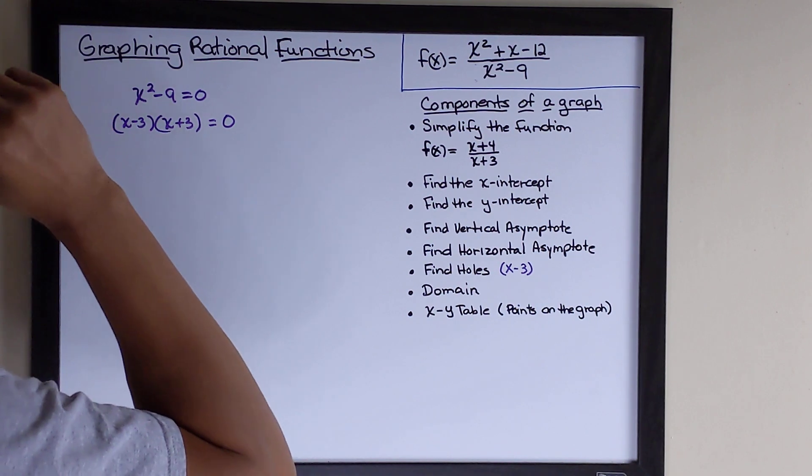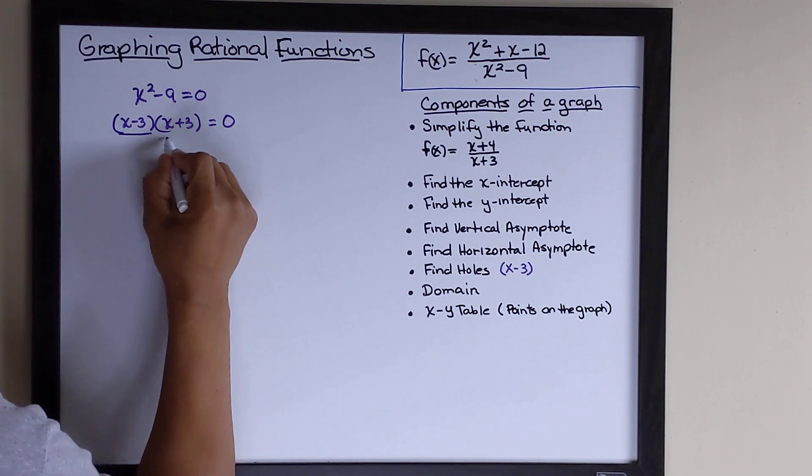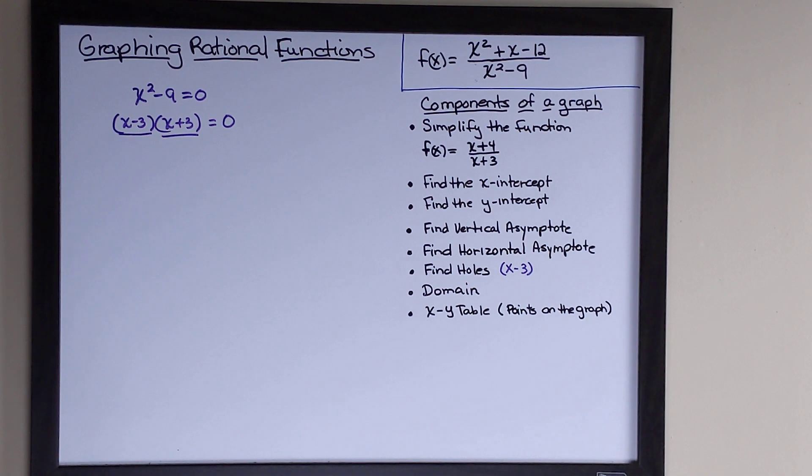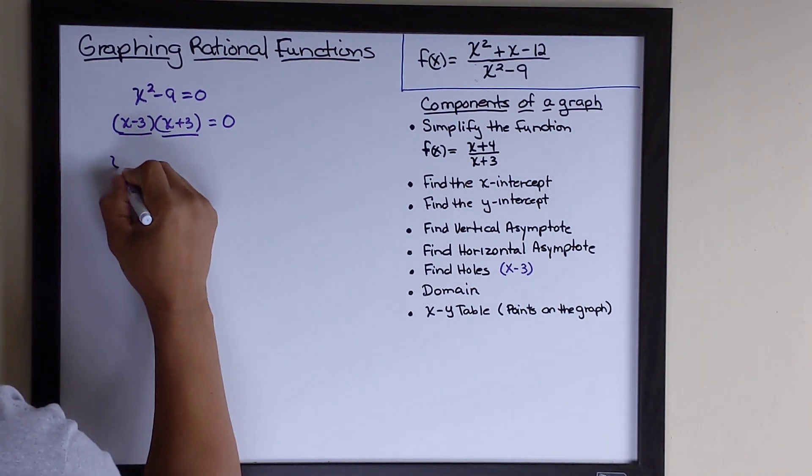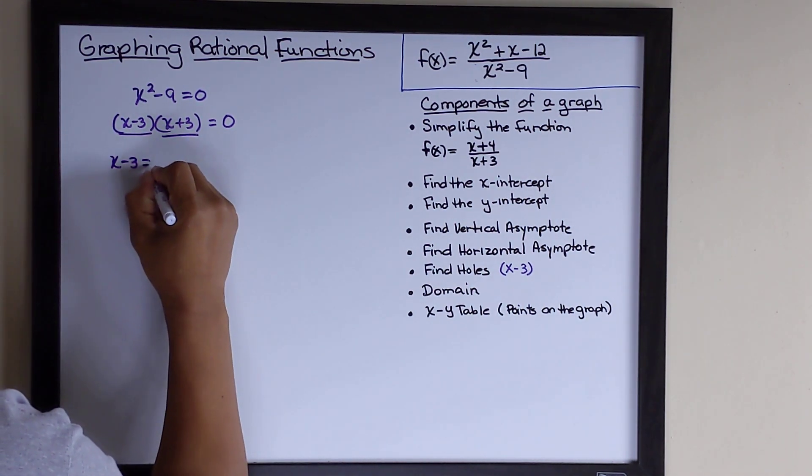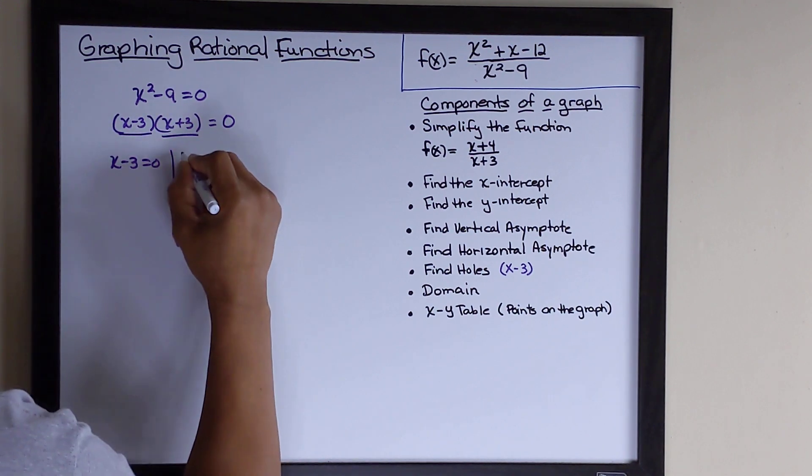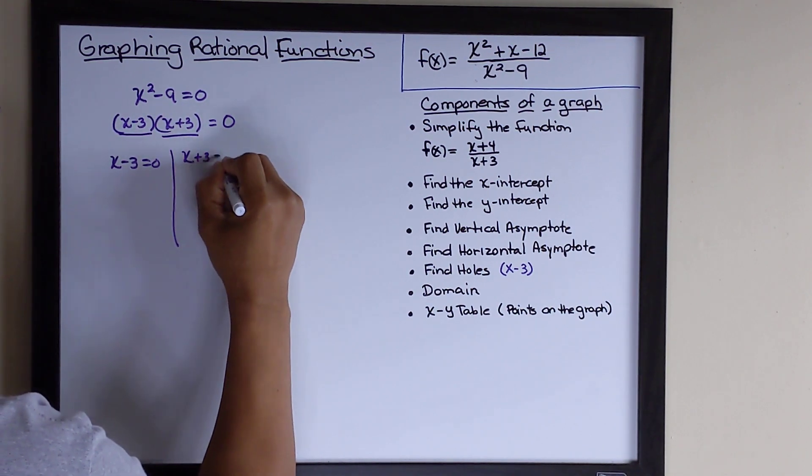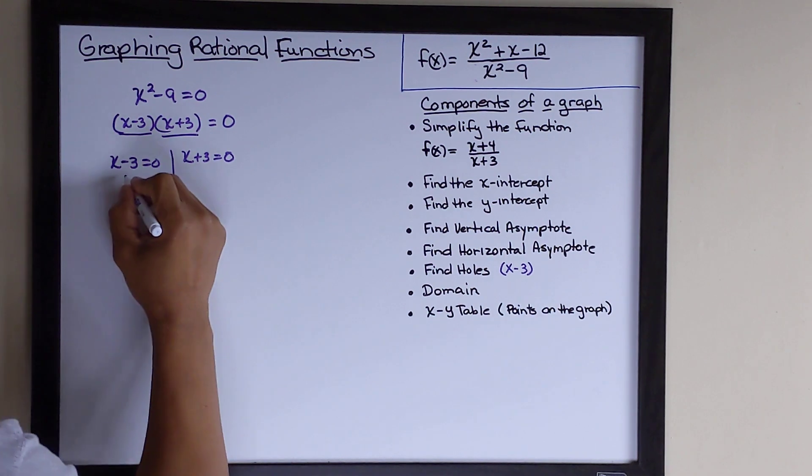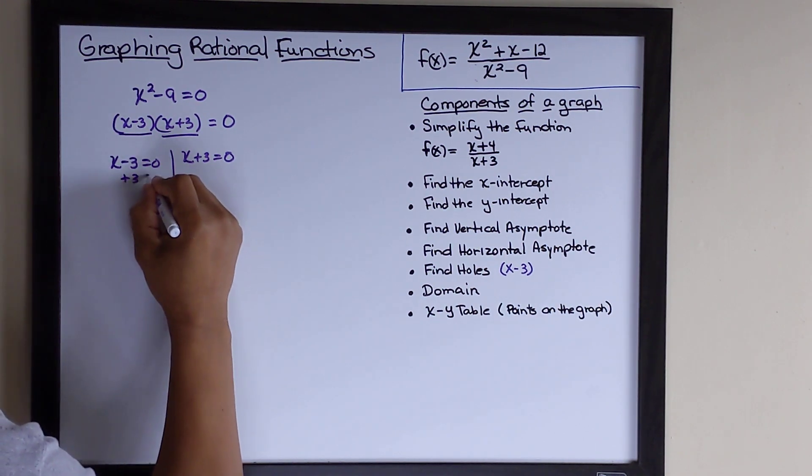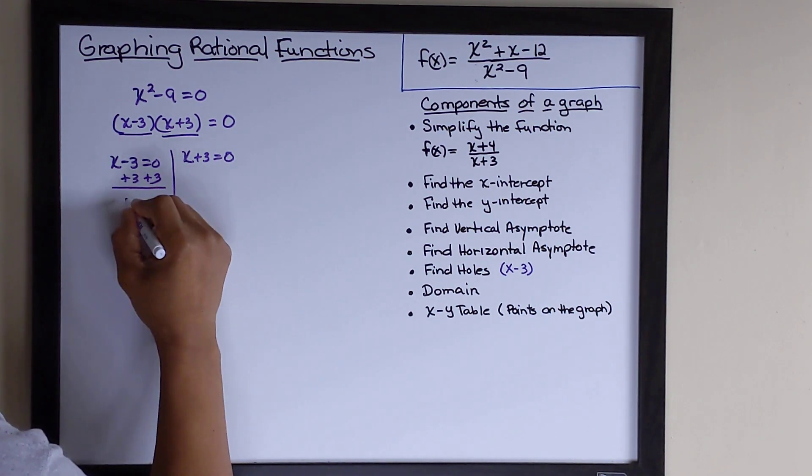What we want to do is set each one of these factors equal to zero and solve for x. So we'll take x minus 3 equals 0, we're also going to take x plus 3 equals 0, and we're just going to solve for x.